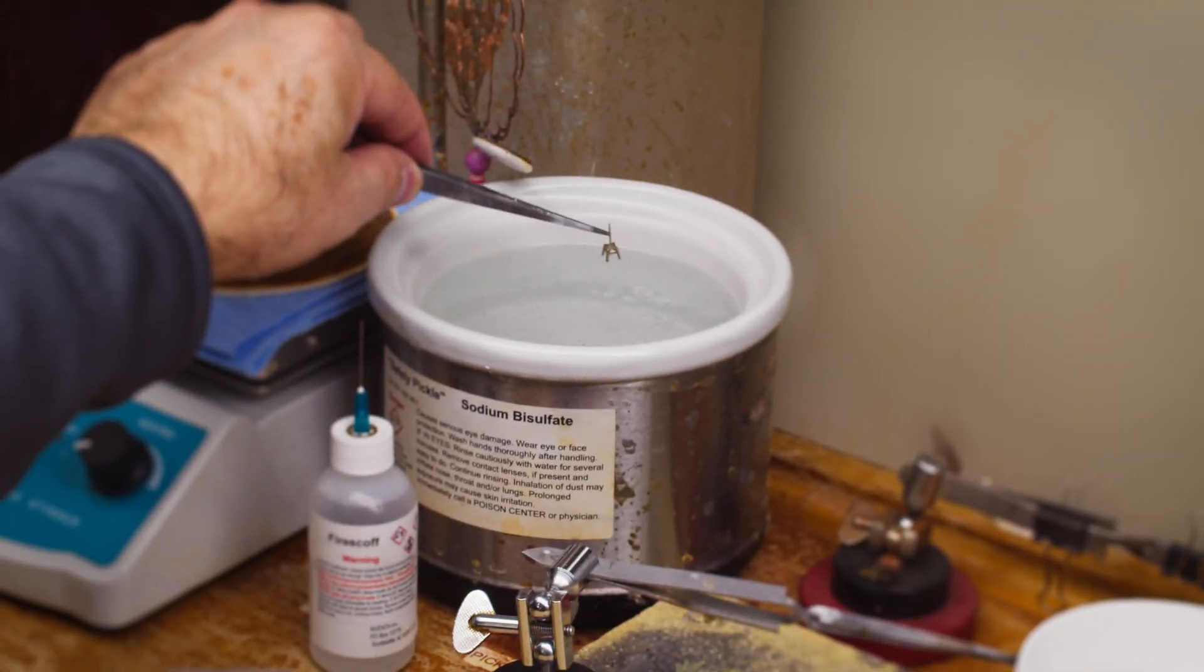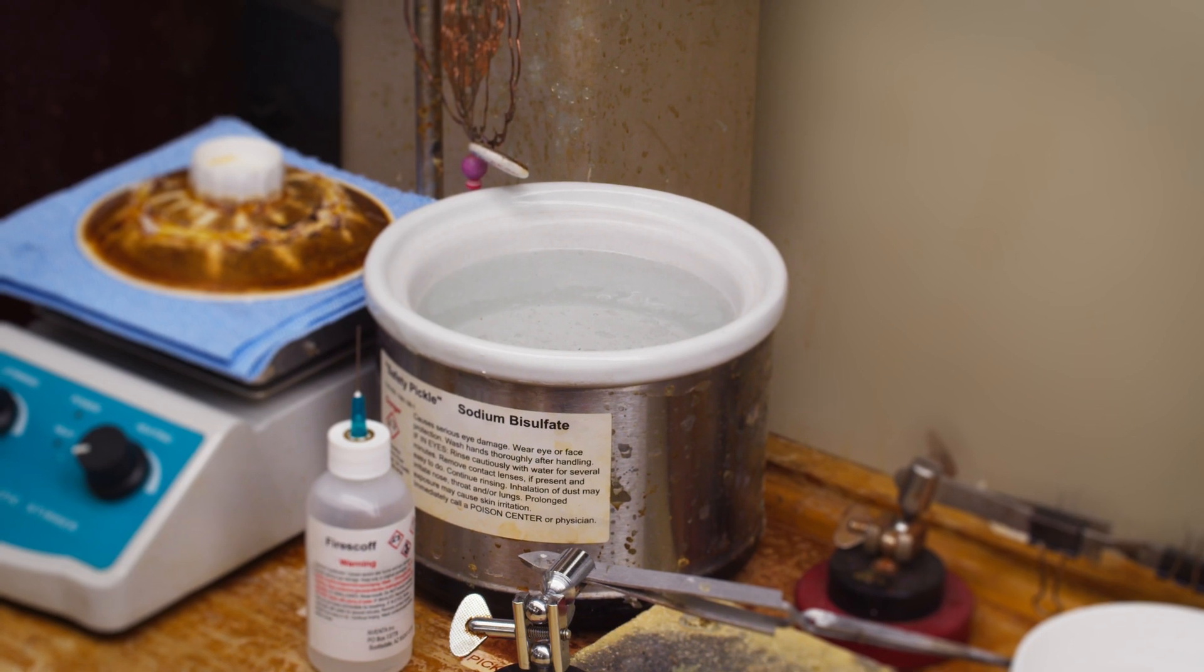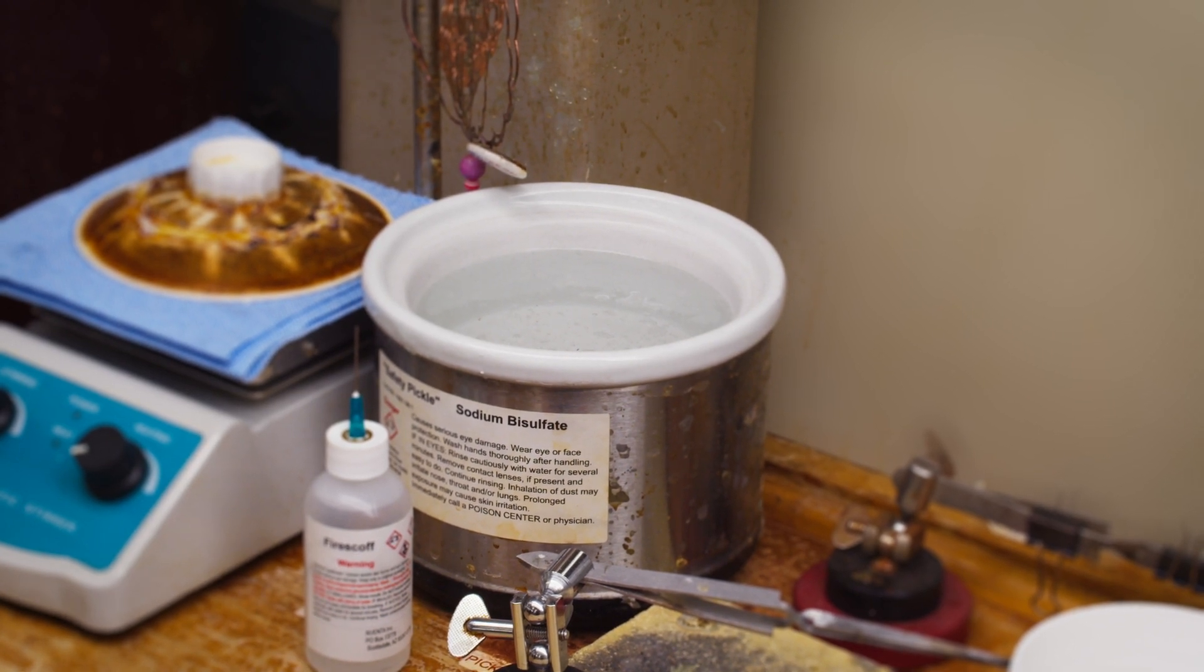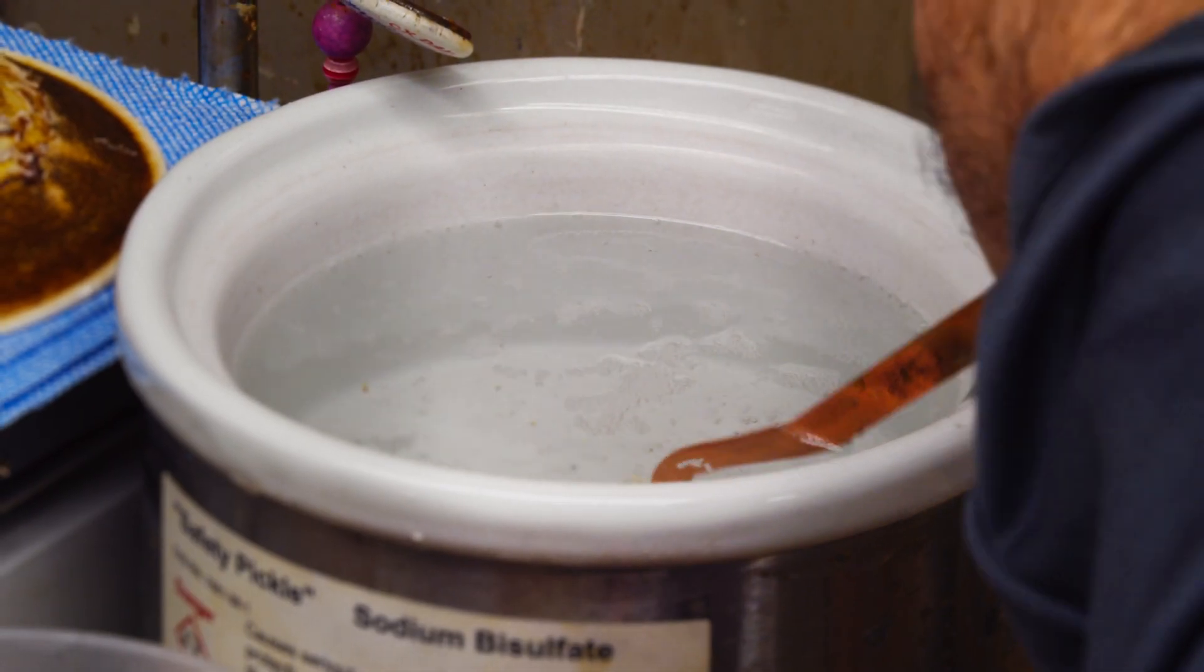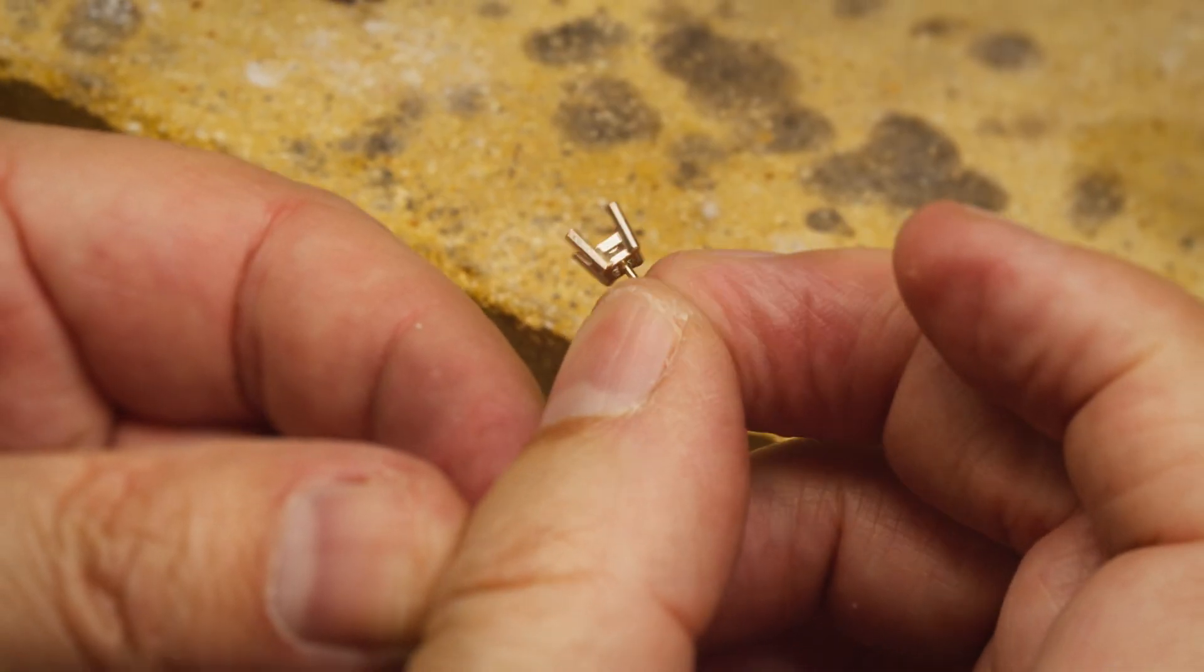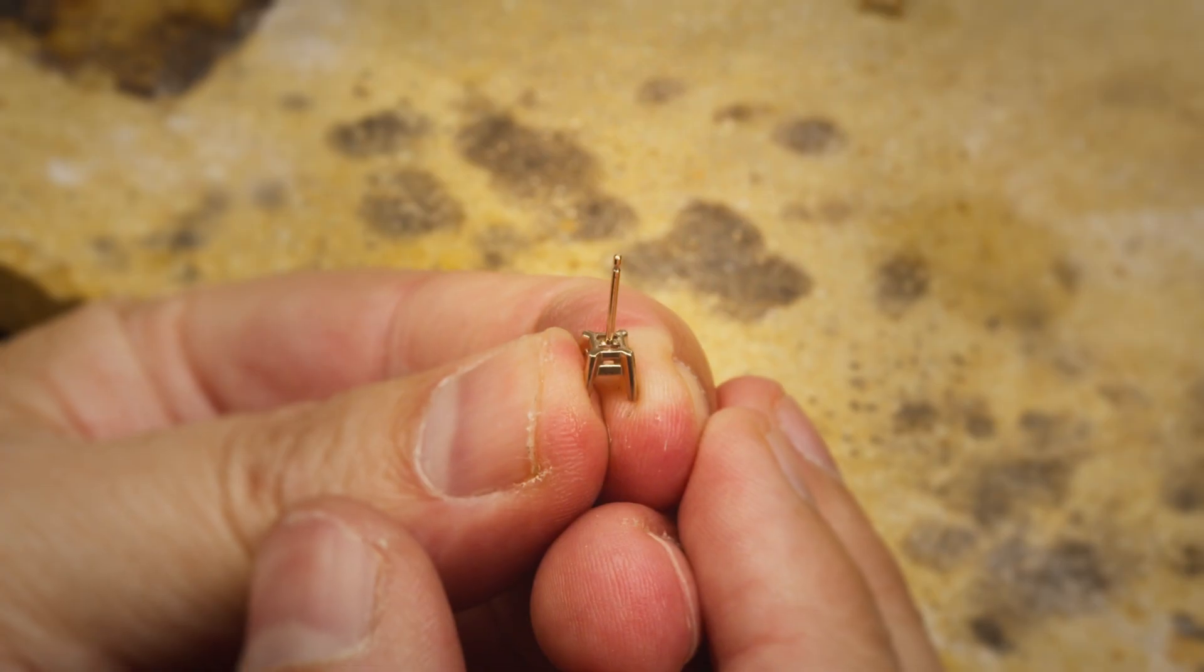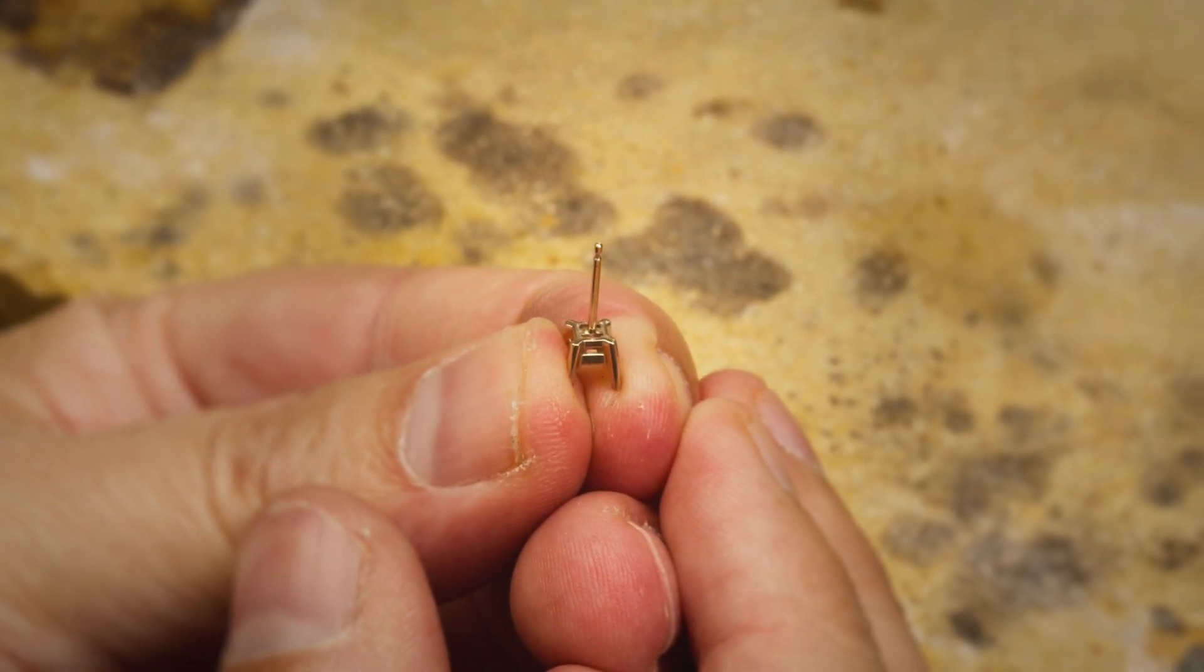Place it in my pickle solution and wait about 30 seconds. Usually the pickle will take off all of the boric and alcohol that's glazed on it. Then we'll just take it out, clean it up, and check it for straightness. If you turn it and it doesn't wobble, it's straight. That's how you do an earring with easy solder.